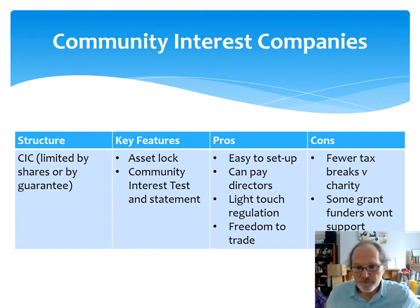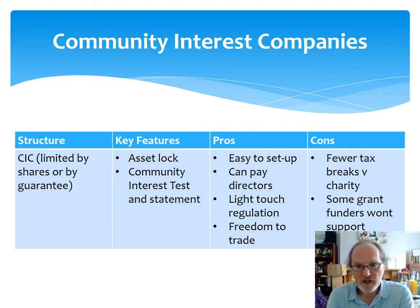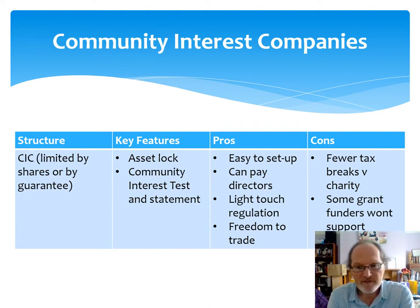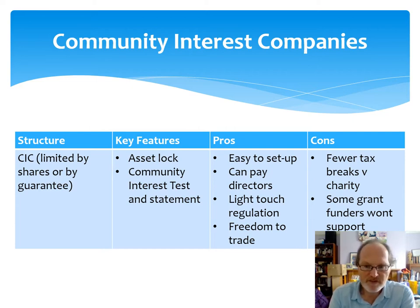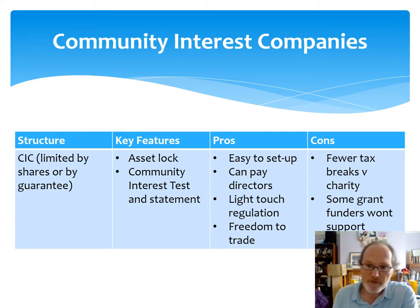The advantages of CICs are that they're really quick and easy to set up — you can do it online for £27 or offline for £35. A really great benefit is you can pay directors: you can be a director and a shareholder of a business and be paid to run that business while drawing a salary. The CIC regulator is what I would call a light-touch regulator — they are quite keen to let you get on and run your business as you wish. Some of the downsides of CICs particularly compared to charity is that you don't get the tax breaks — you have to pay corporation tax on profits, you have to pay business rates, you won't get gift aid on donations, and there are some grant funders who will only fund registered charities.